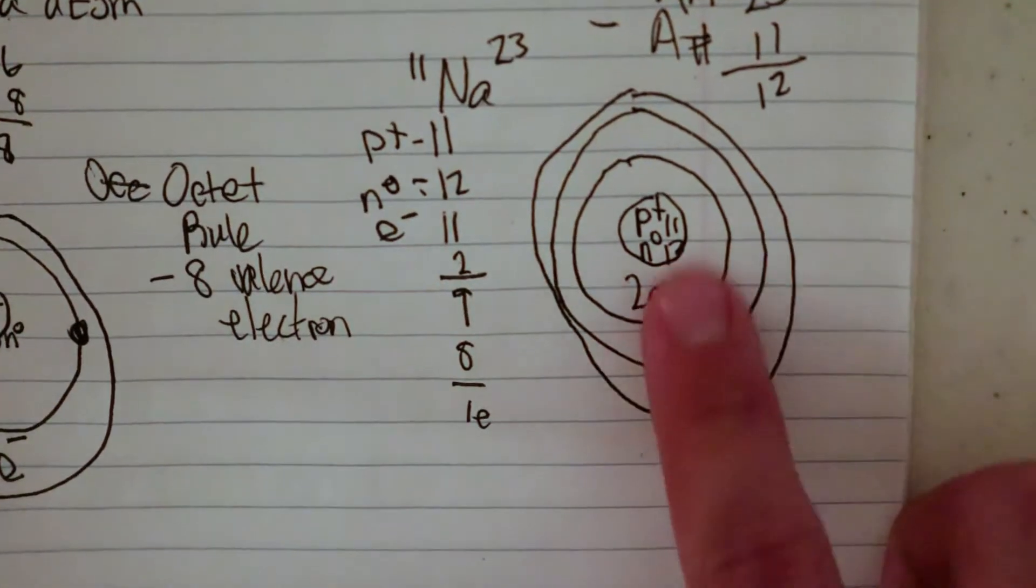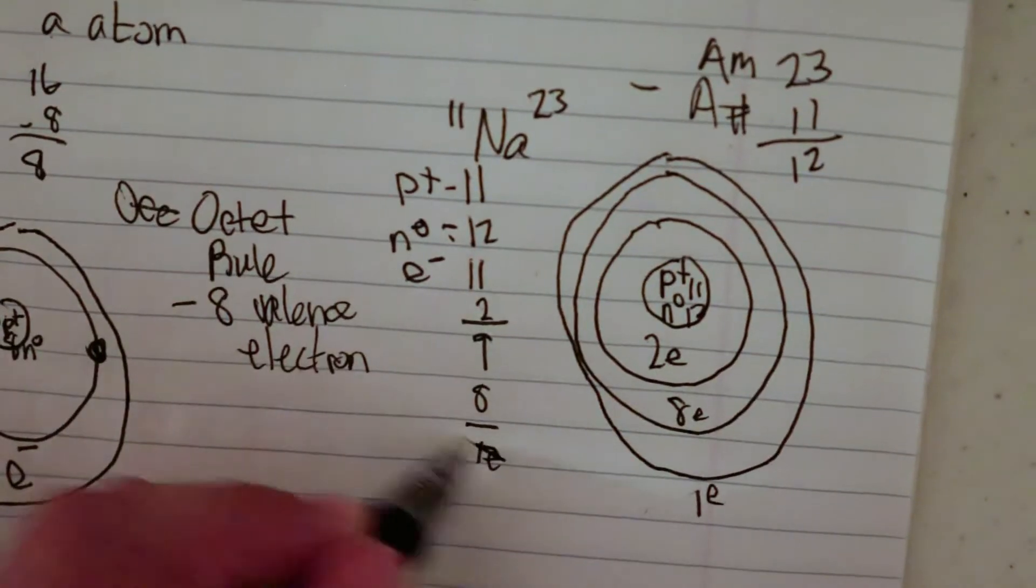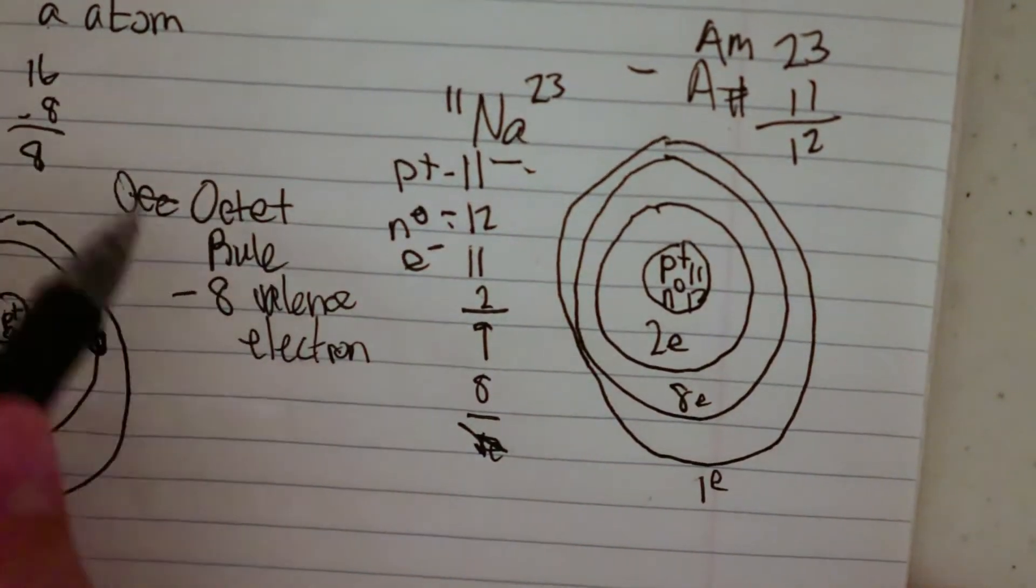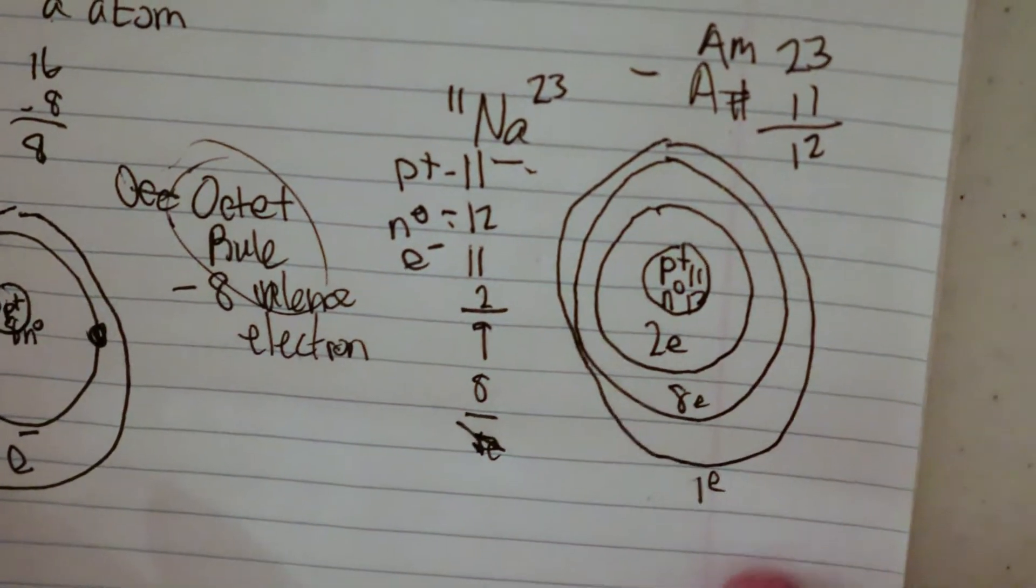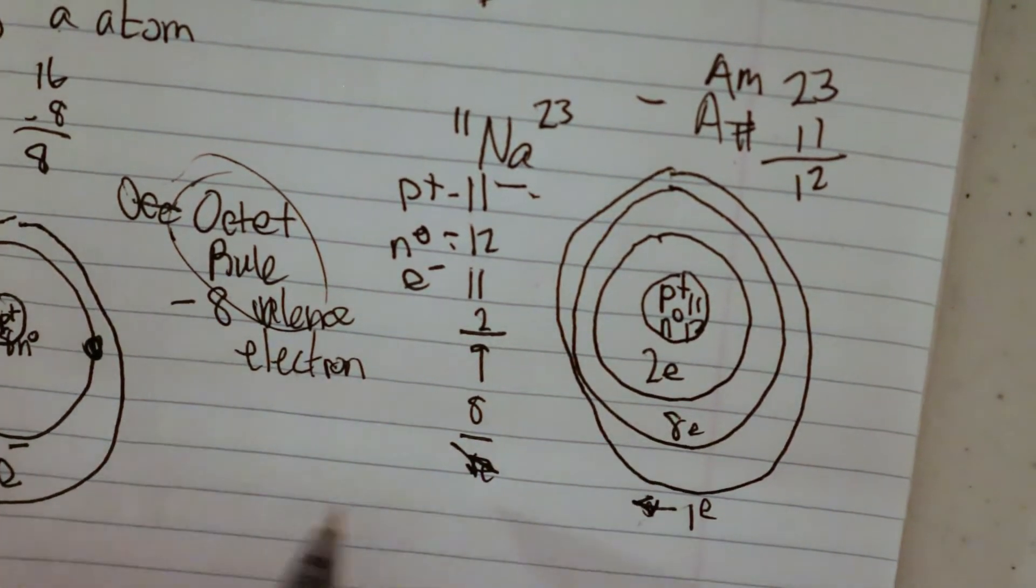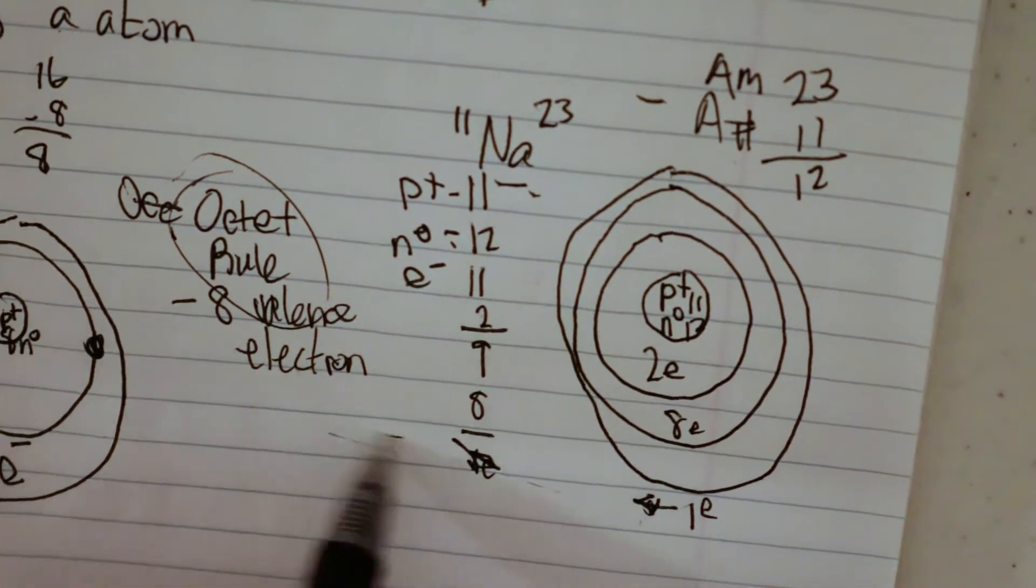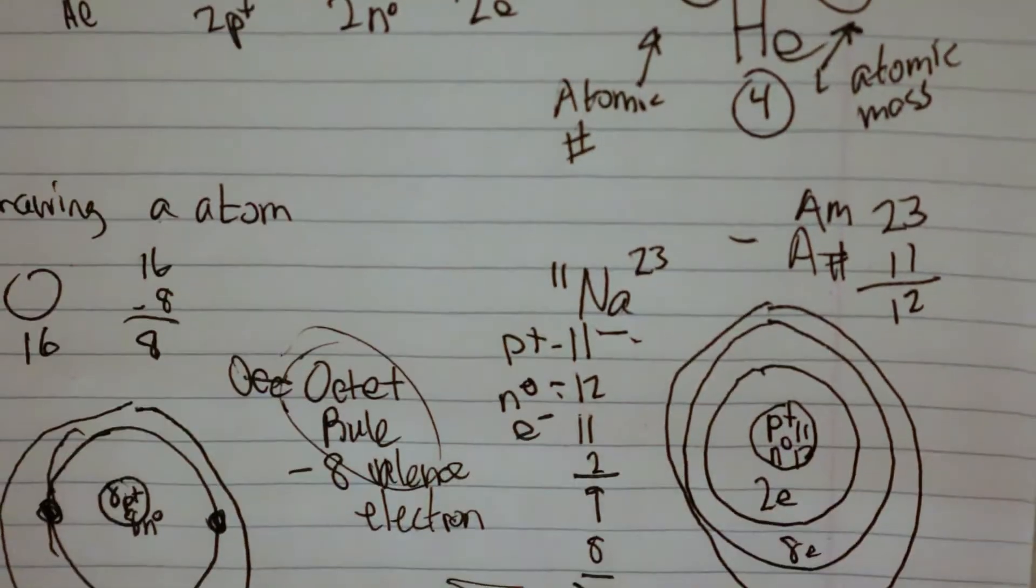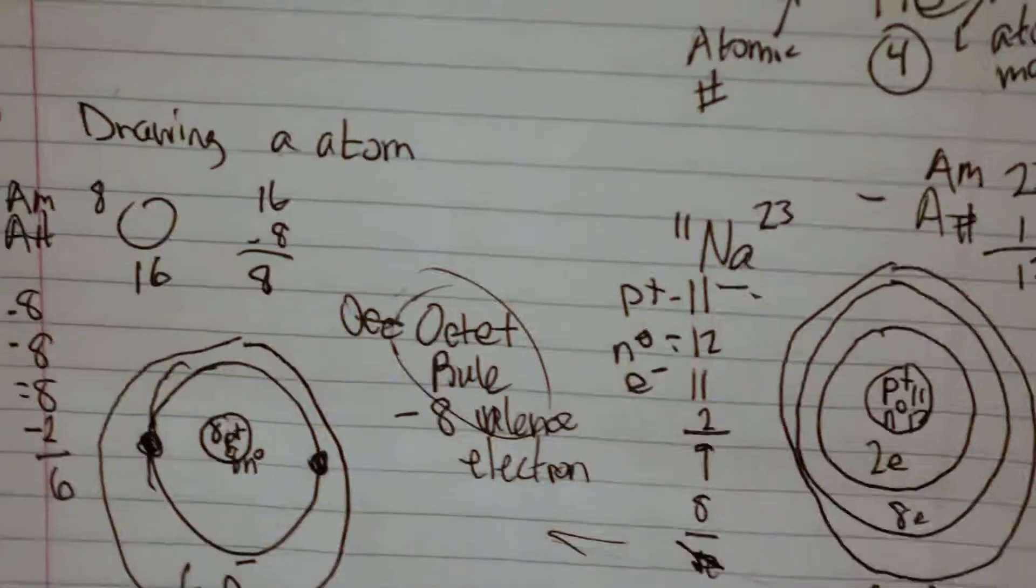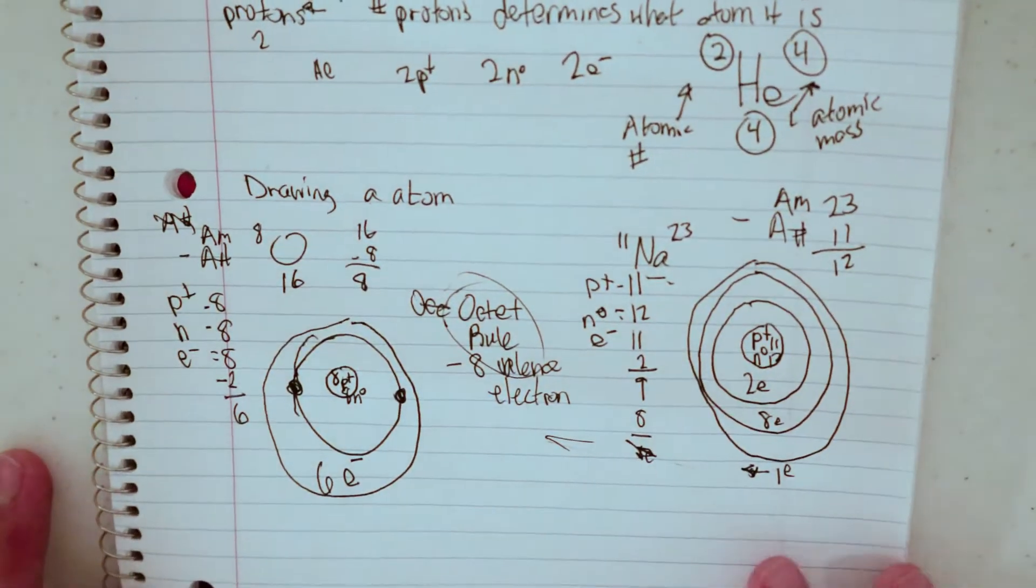And so for a Bohr model, it would be 2-8-1 for the energies. And so if sodium wanted to get to the octet rule and wanted eight in its outer thing, all it would have to do is lose one electron, maybe donate it over here to oxygen here, who would like two, so that way it can follow the octet rule as well. And so that's kind of a quick and dirty version on how to draw a Bohr model.